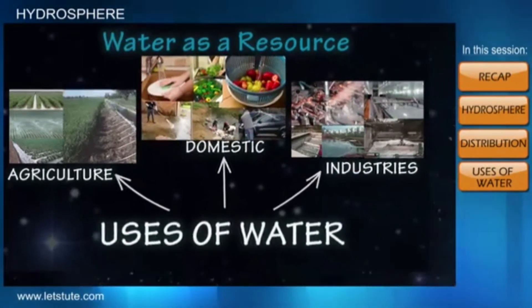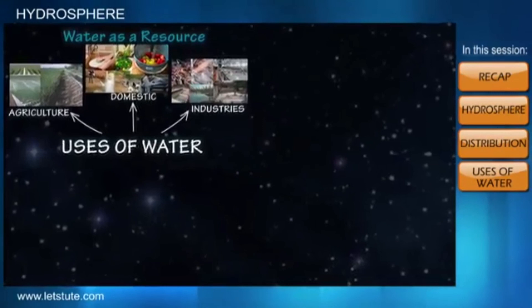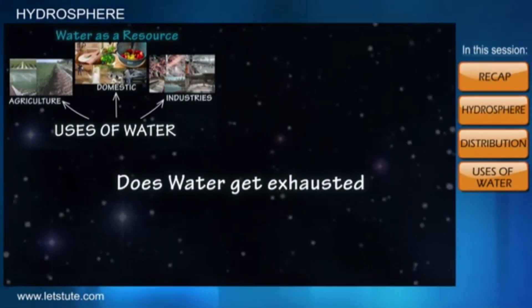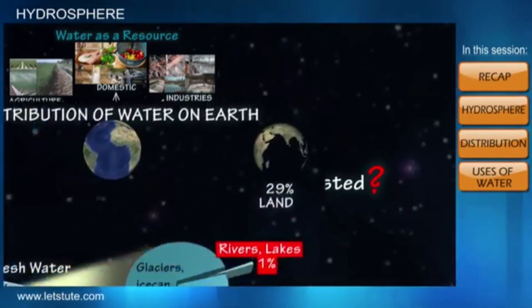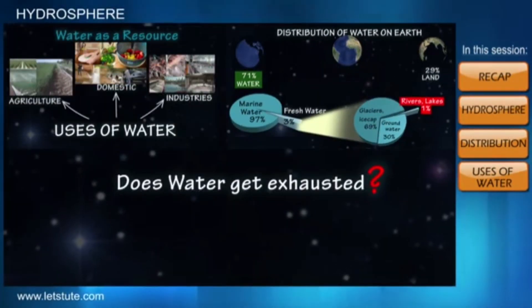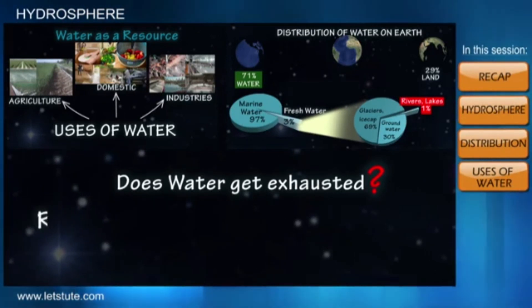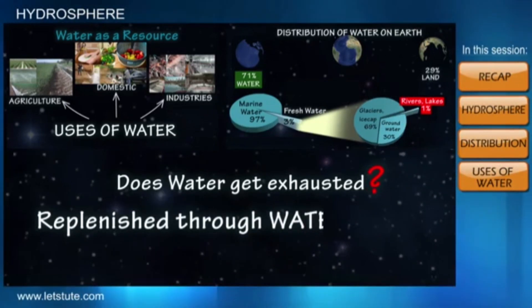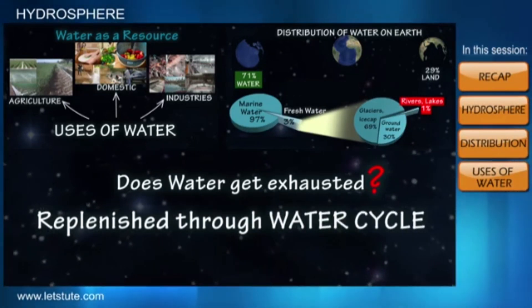Friends, we saw here that water has many different uses — but does all this water get exhausted as we use it? If that is the case, then how is the percentage of water on the earth maintained? Water is replenished or recycled through a natural process which is called the water cycle.